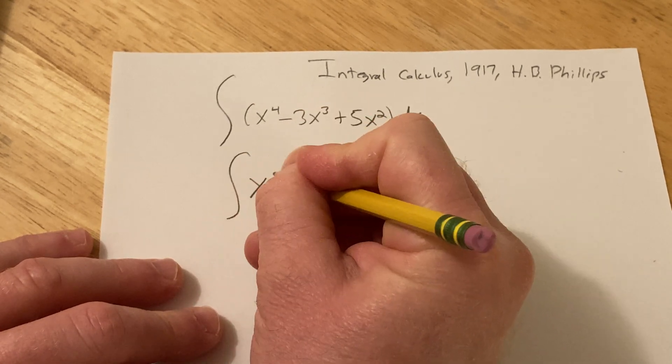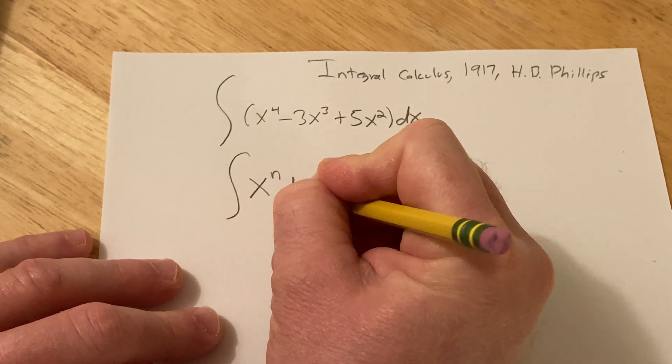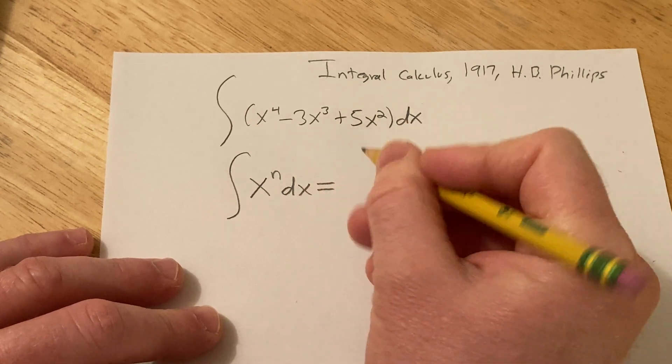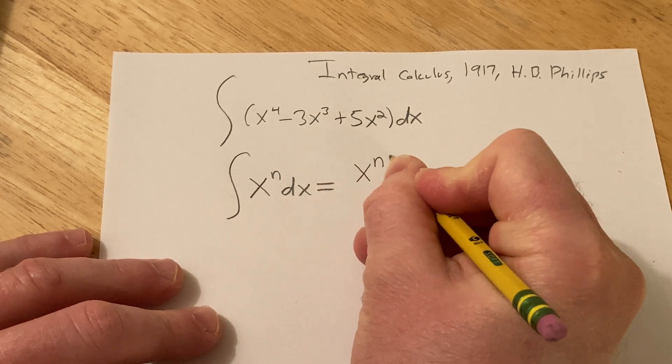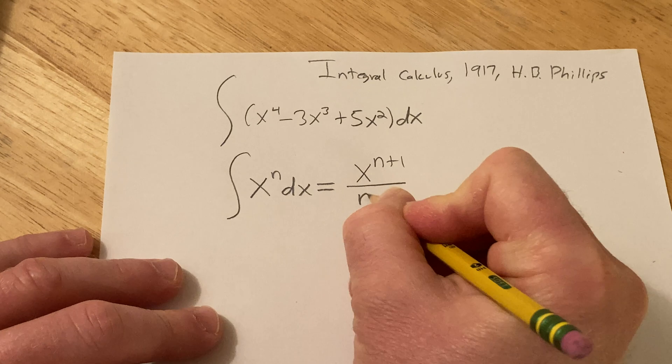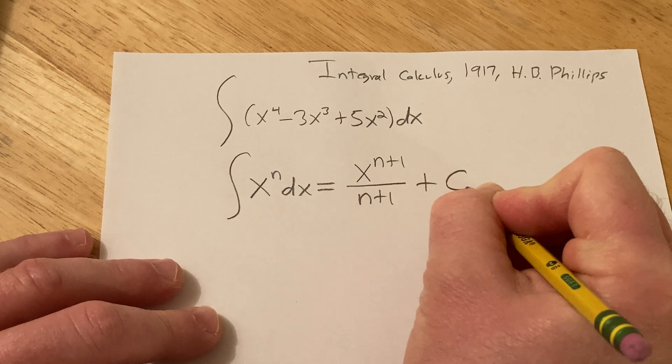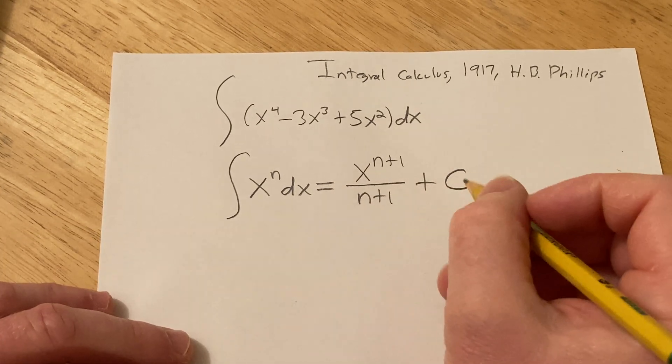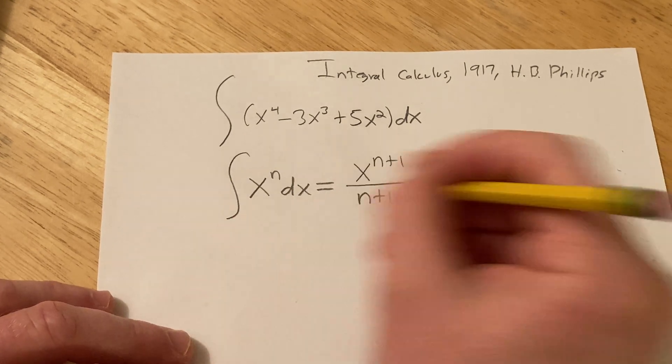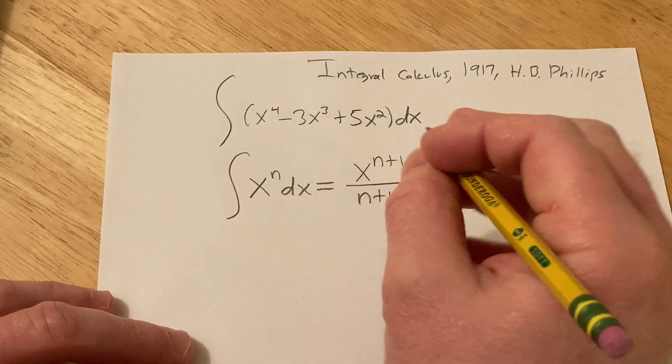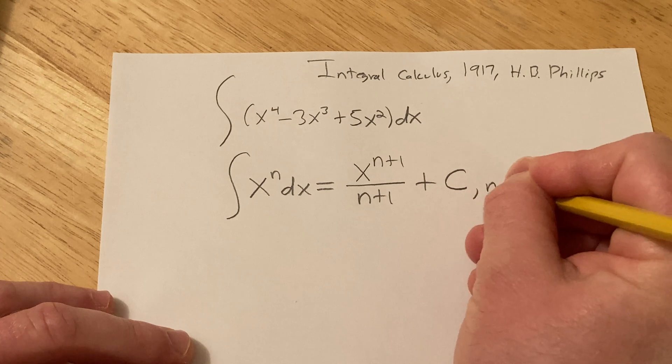It says if you have the integral of x to the n with respect to x, this is equal to x to the n plus 1 over n plus 1 plus c. Now this formula as it's written here is not completely complete. It's missing something.